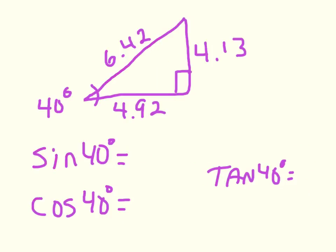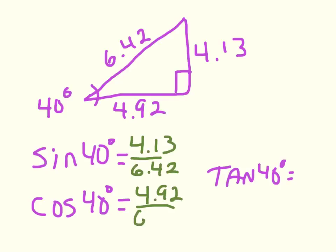We've got another right triangle where I threw in all numbers. The whole idea behind using trig is that we won't have all the numbers — we'll only have two — but we're using all the numbers here so we know what we're writing. Standing at the 40-degree angle: sine of 40 is opposite 4.13 over hypotenuse 6.42. Cosine is adjacent 4.92 over 6.42. Tangent is opposite 4.13 over adjacent 4.92.